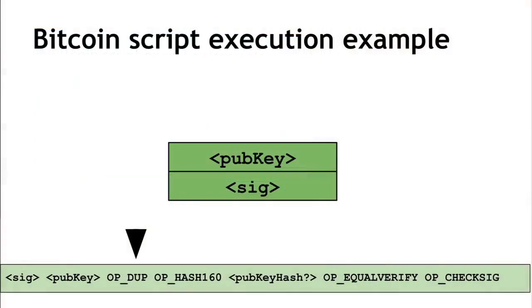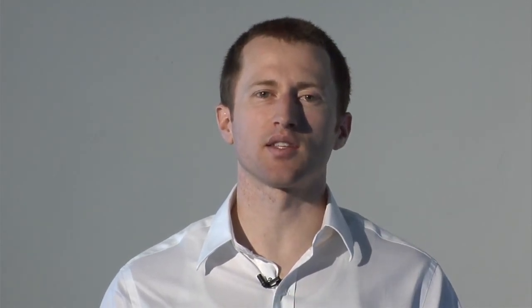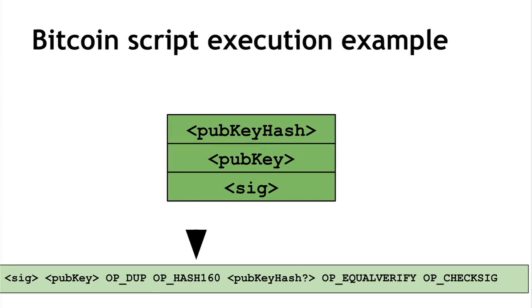After pushing those two values, we start executing the second half of the script — the scriptPubKey, specified by the sender. First, the OP_DUP instruction takes the value on top of the stack, pops it off, and writes two copies back — duplicating the public key. Next, OP_HASH160 takes the top value on the stack and computes a cryptographic hash of it, converting the public key into a hash of the public key.